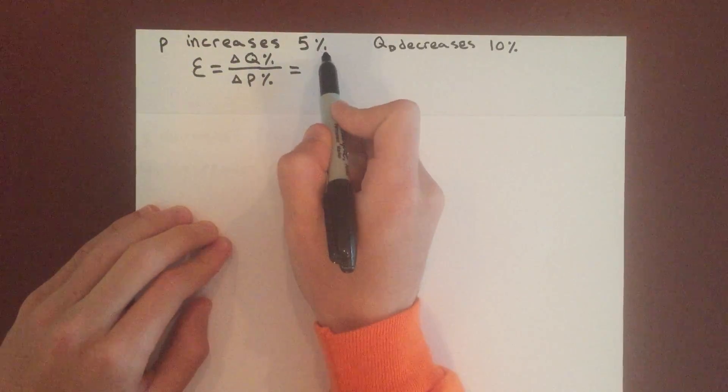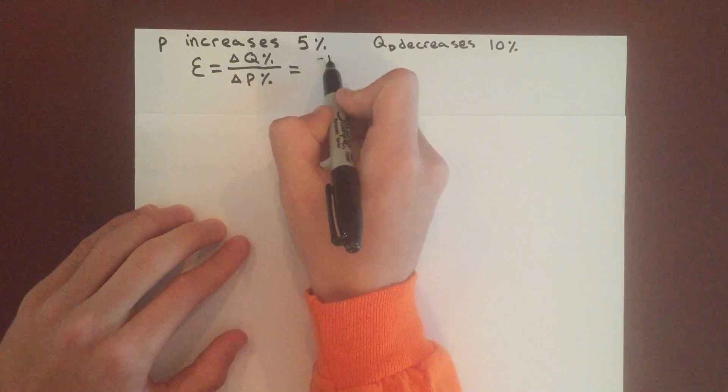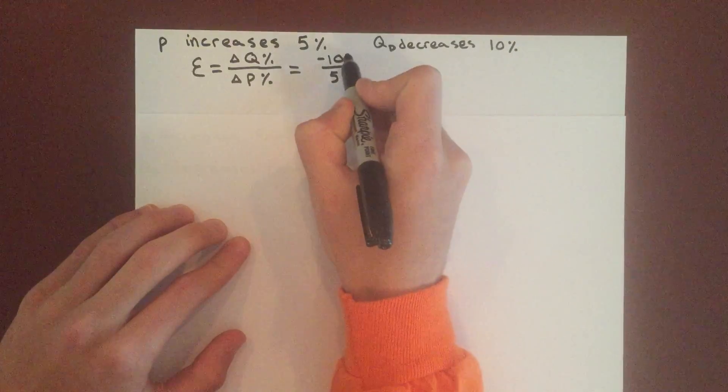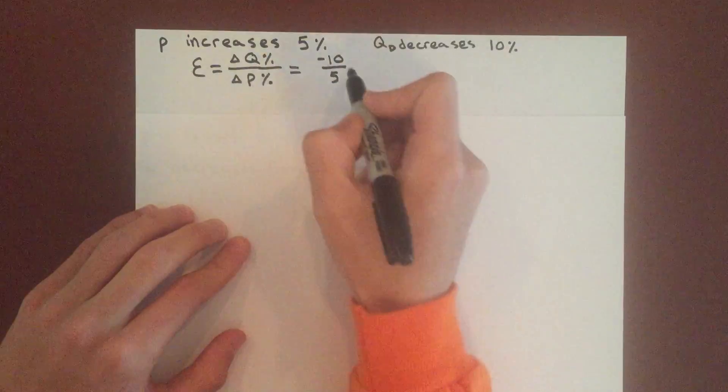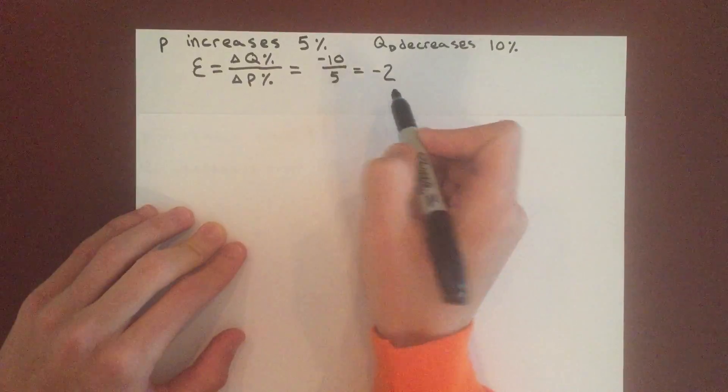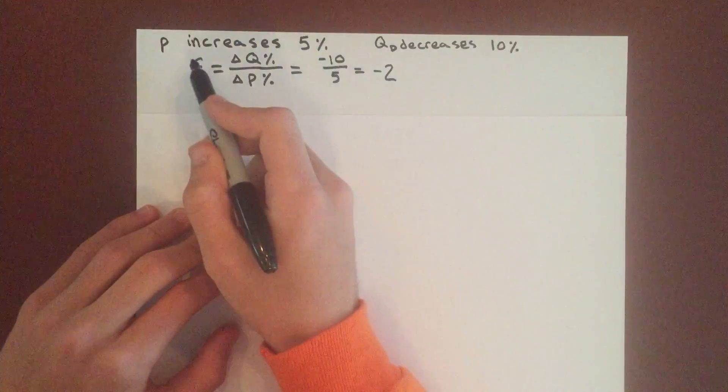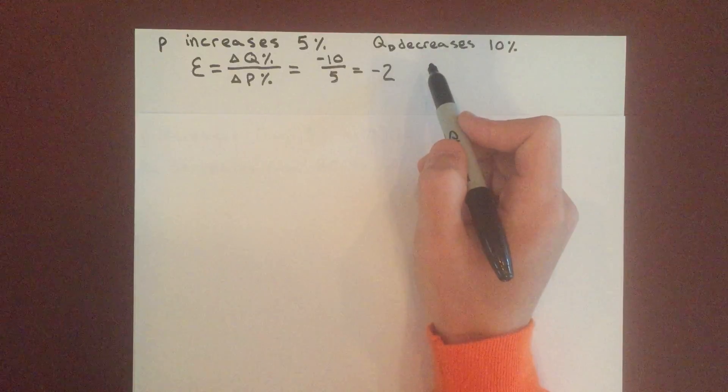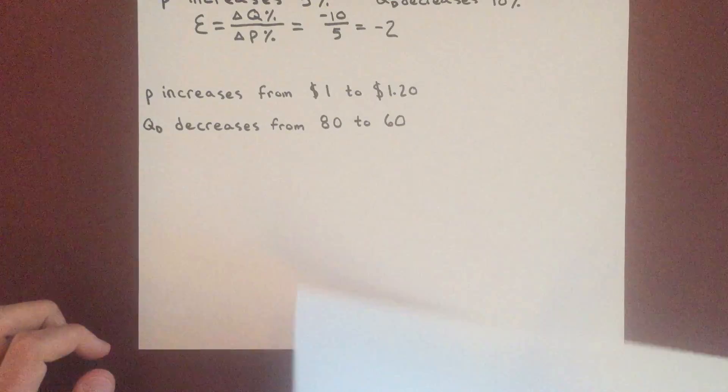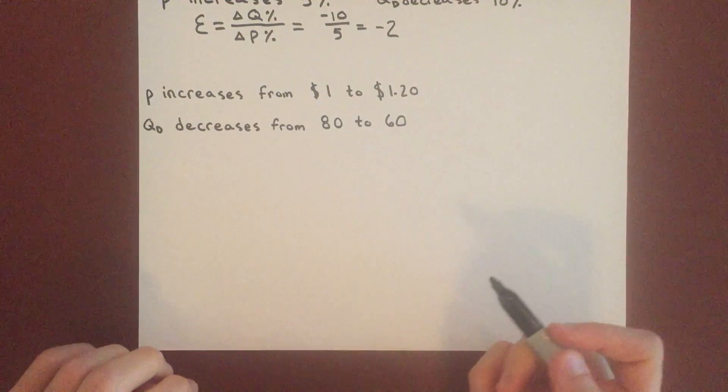If price increases 5% and Q demanded decreases 10%, we have negative 10 over 5. Since both are in terms of percent, we can divide straight up and elasticity is negative 2. This makes sense for elasticity of demand because when price increases, you demand less. This is the easy algebraic way to solve for elasticity.